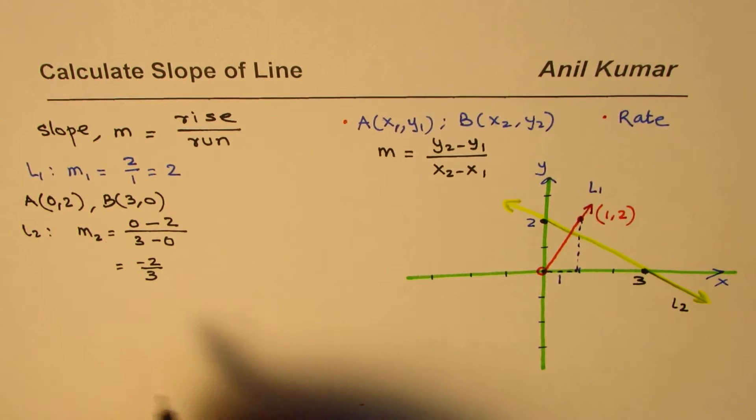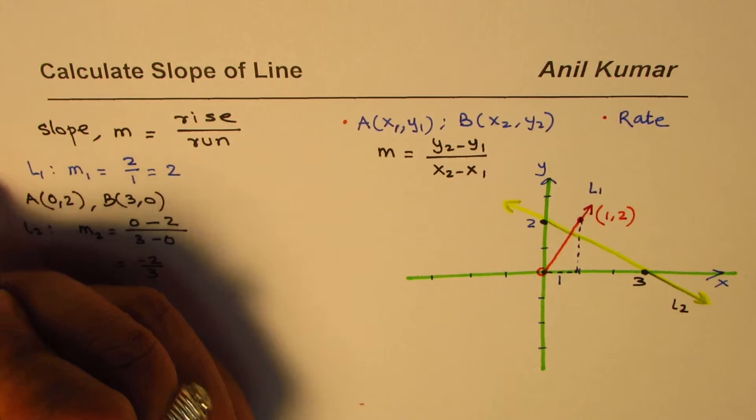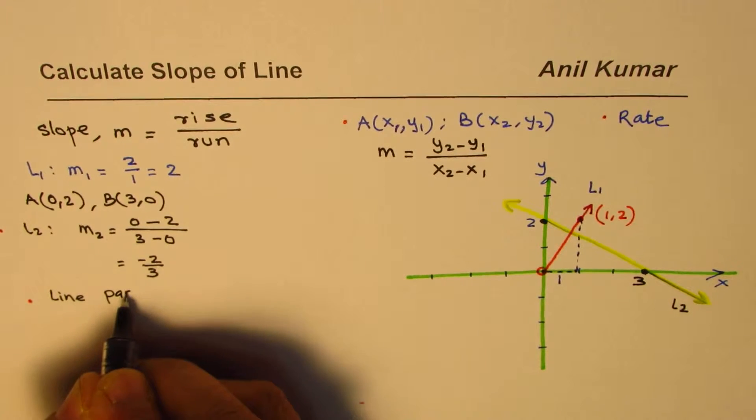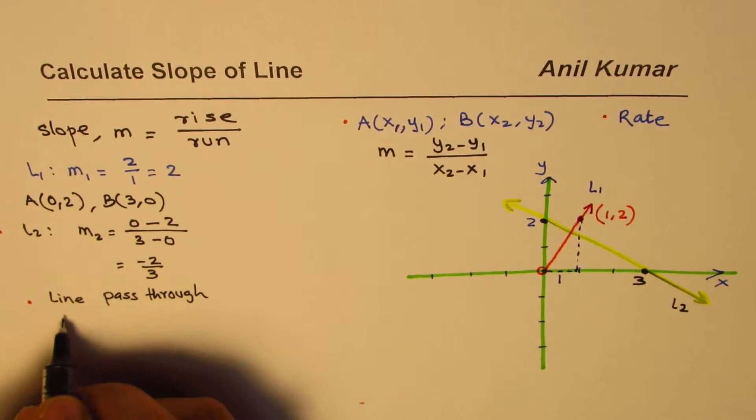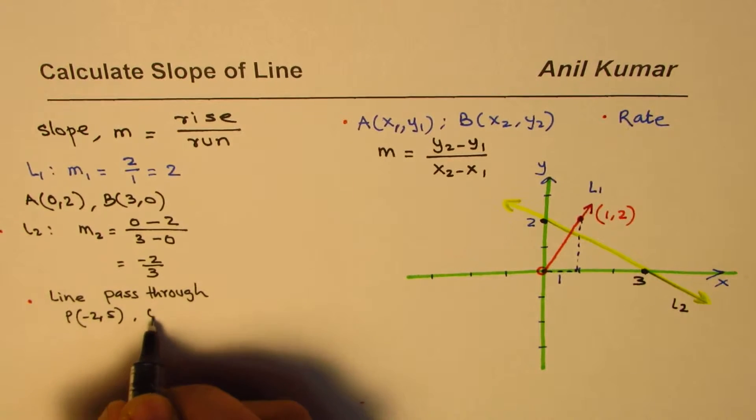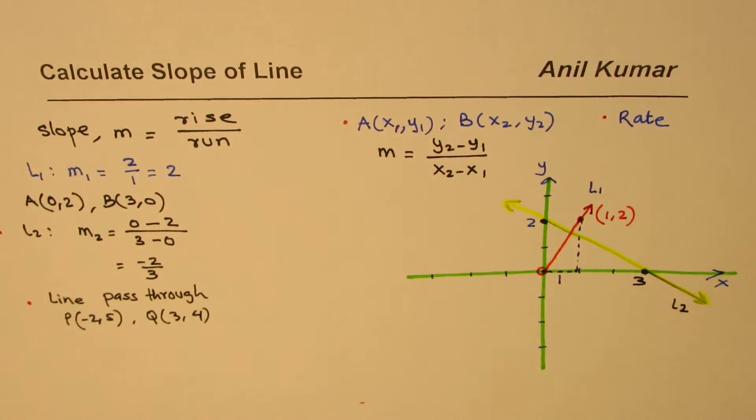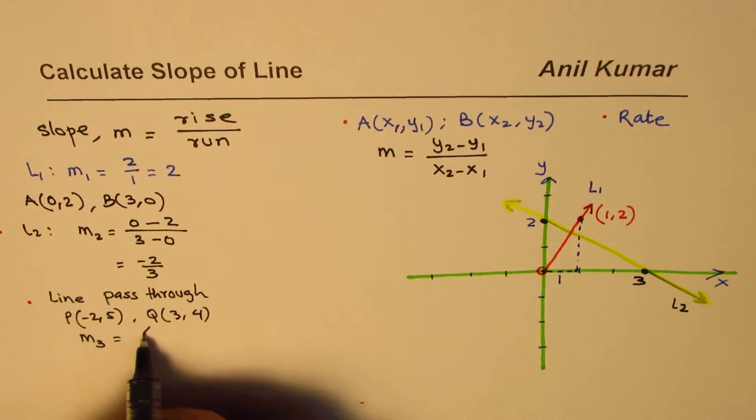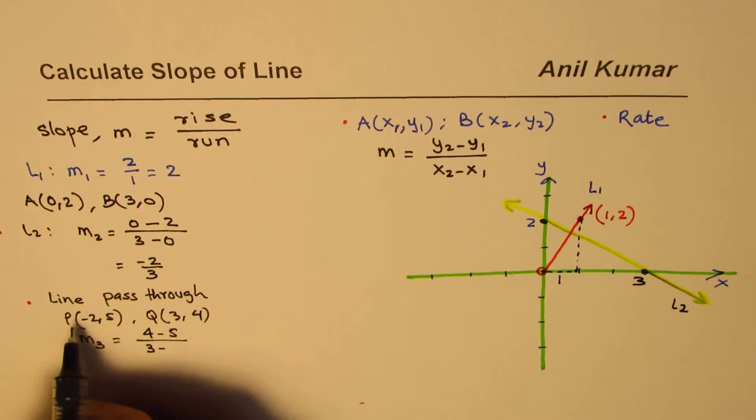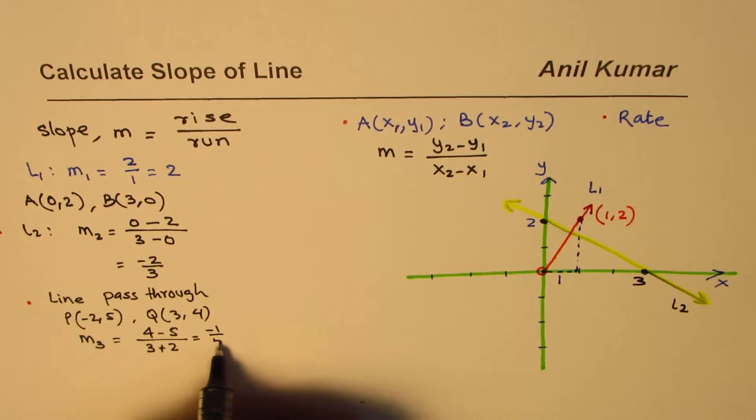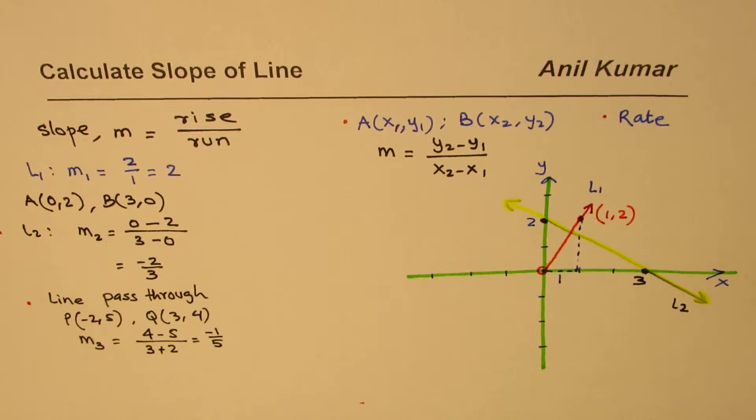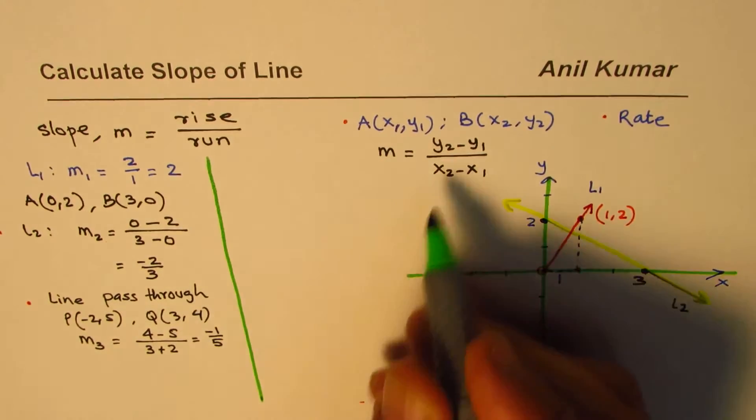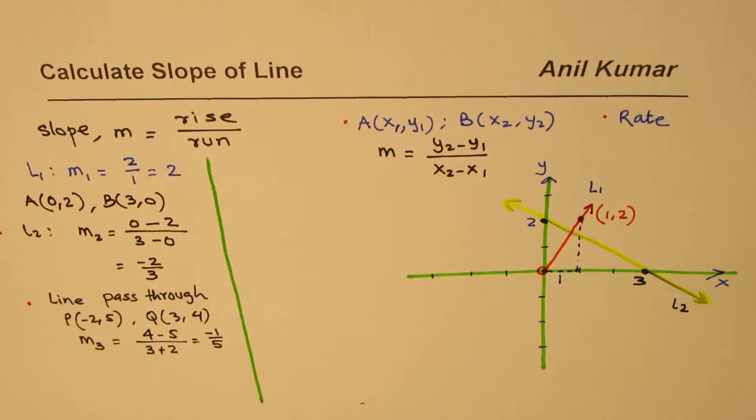At times, you may be given a question where a line passes through points P and Q. Let's say point P is minus 2 and 5, and point Q is 3 and 4. Then, what is the slope? We can apply the same formula. For line 3, y2 minus y1, that is 4 minus 5 divided by 3 minus minus 2, which makes it plus 2. We get a slope of minus 1 over 5. You can find the slope by finding the ratio of change in y over change in x value.